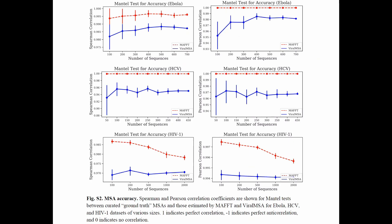To assess the accuracies of the alignment tools, I took the viruses that had ground truth multiple sequence alignments and computed pairwise distance matrices of the ground truth alignments, as well as distance matrices of the estimated alignments, and then performed a Mantel test of correlation across the estimated and true multiple sequence alignments. On the left I show Spearman correlation, and on the right I show Pearson correlation. A value of 1 indicates perfect correlation, negative 1 indicates perfect anti-correlation, and 0 indicates no correlation. We see that both tools consistently have extremely high correlation, meaning both tools are consistently estimating very accurate multiple sequence alignments, with MAFFT consistently doing better than Viral MSA.